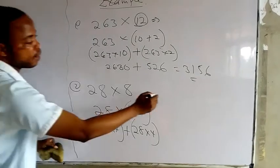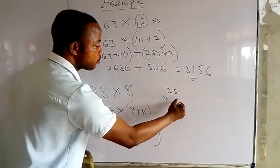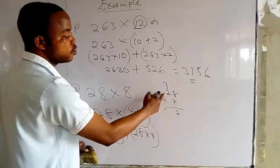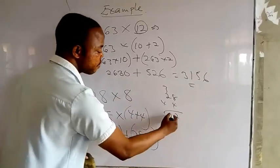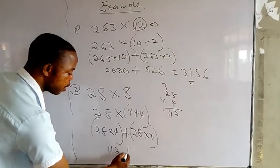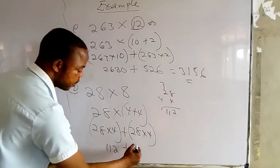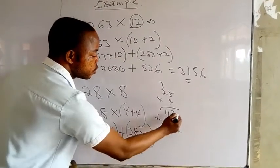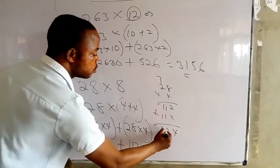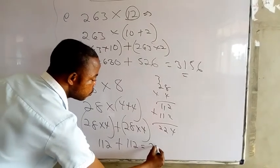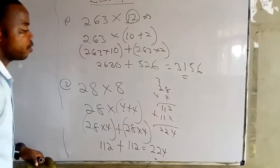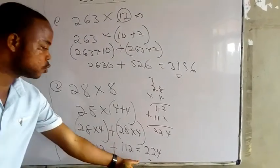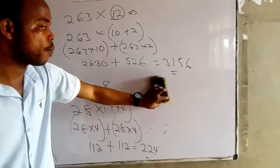Let's multiply. So we have 28 times 4, 4 times 8 is 32, remember 3, 4 times 2 is 8 plus 3 is 11. So we have 112. So you get 112 plus 112. The answer becomes 224. That means when you multiply 28 times 8, you get 224 using the distributive property.